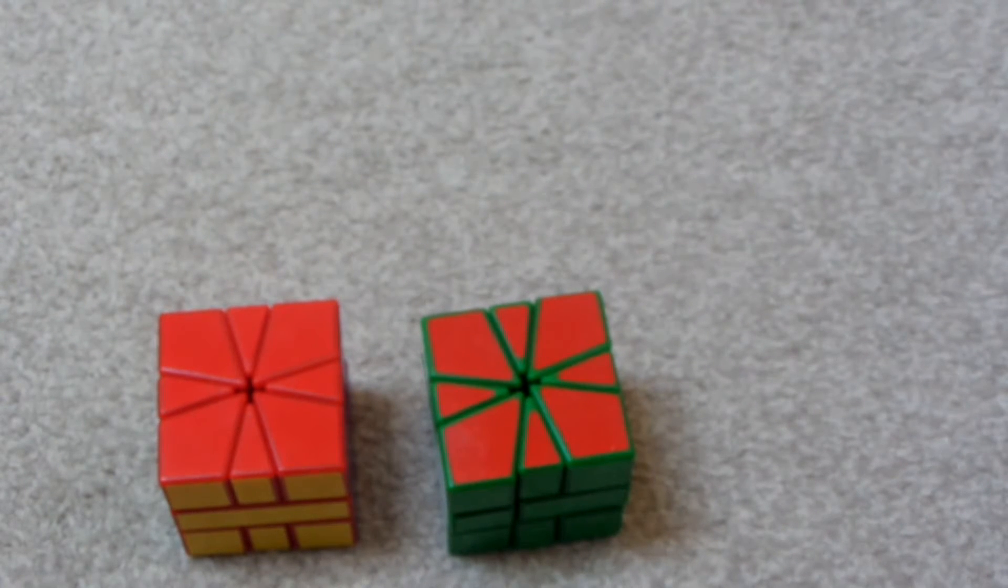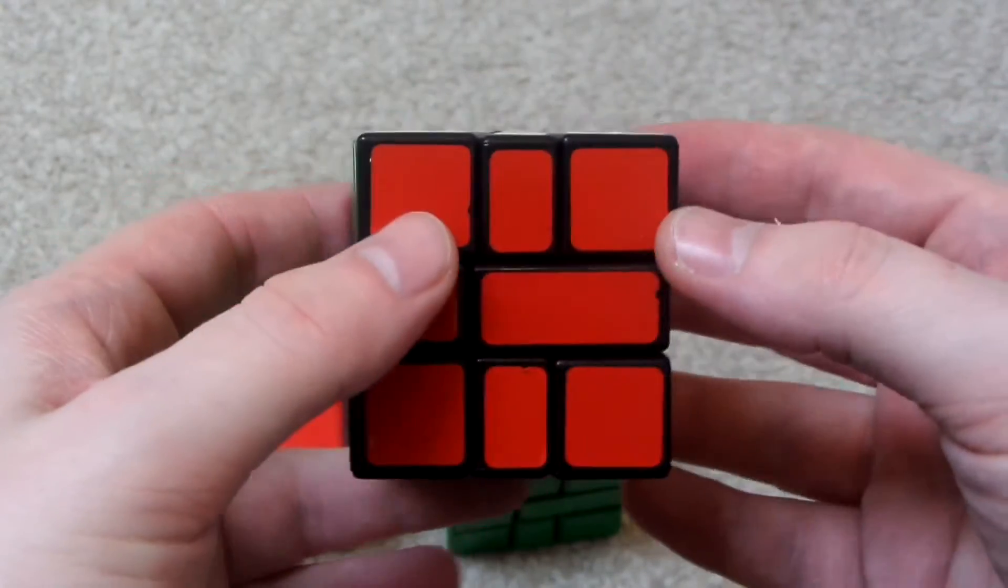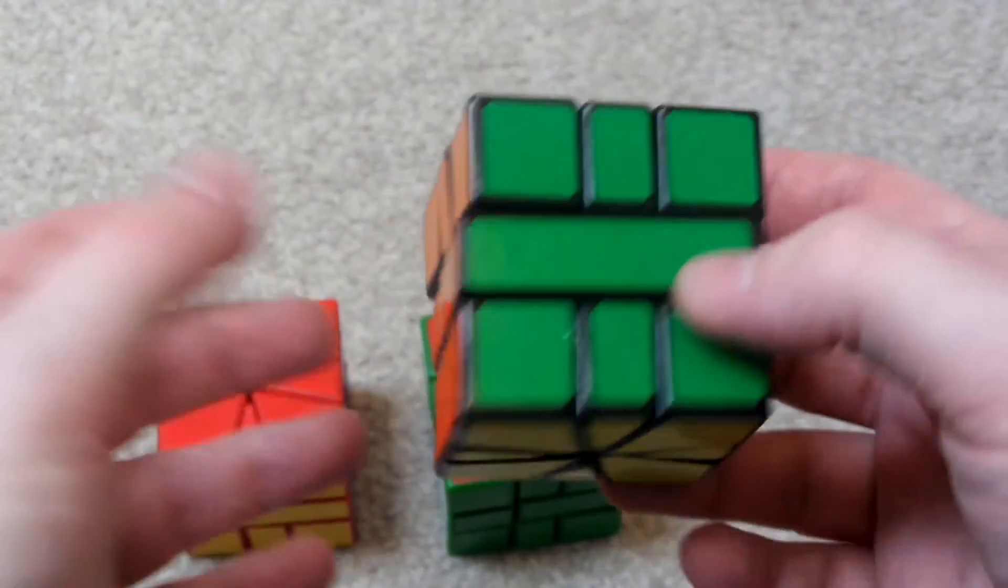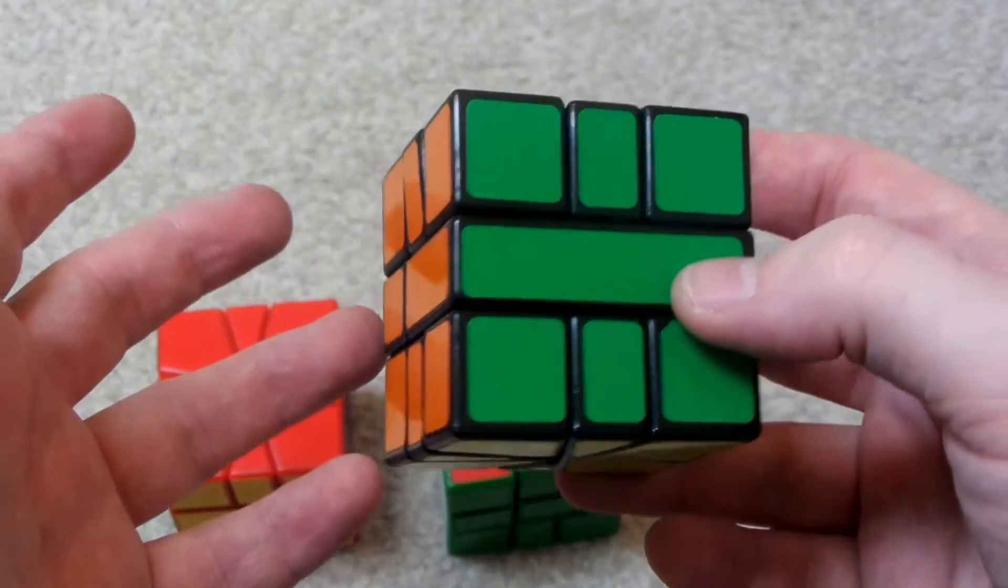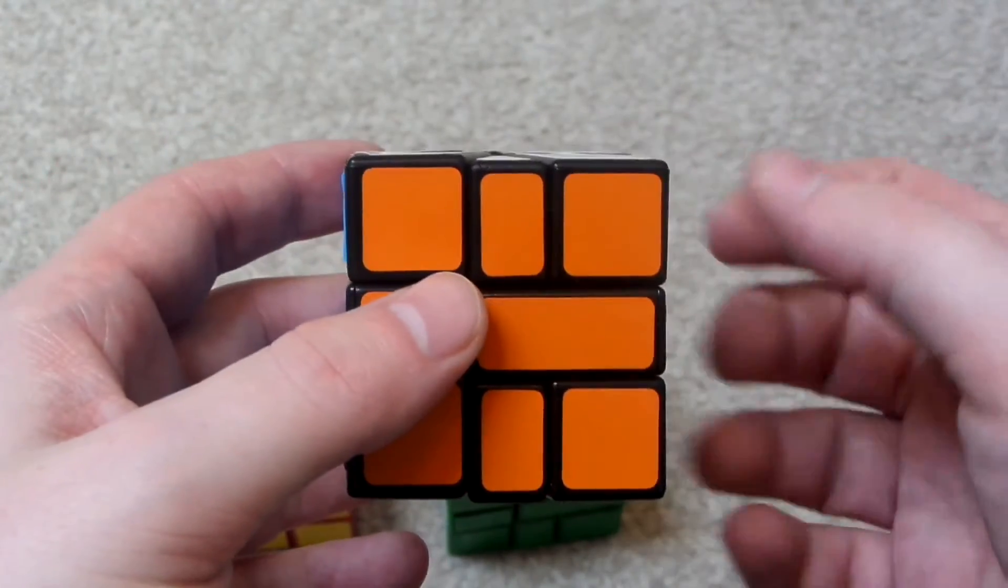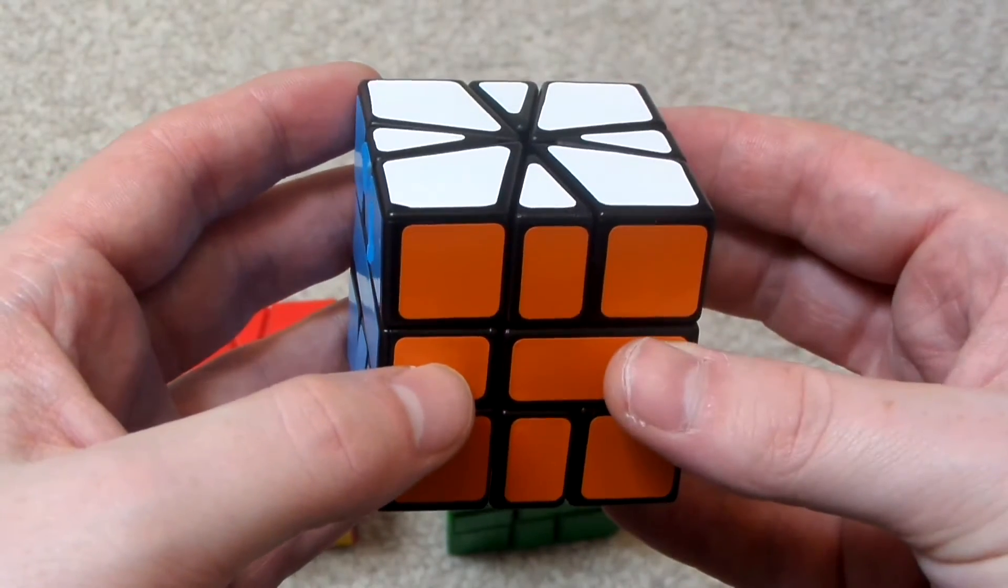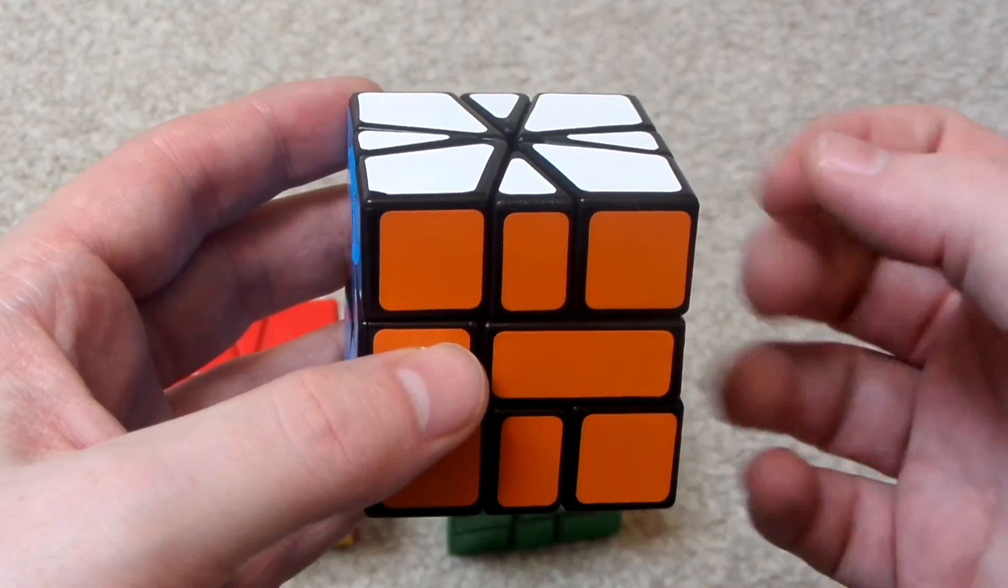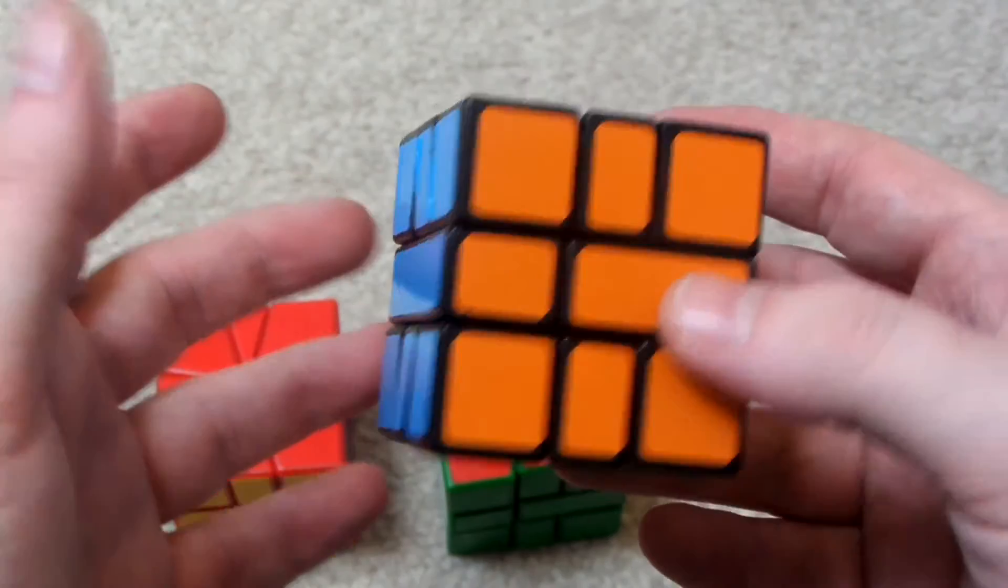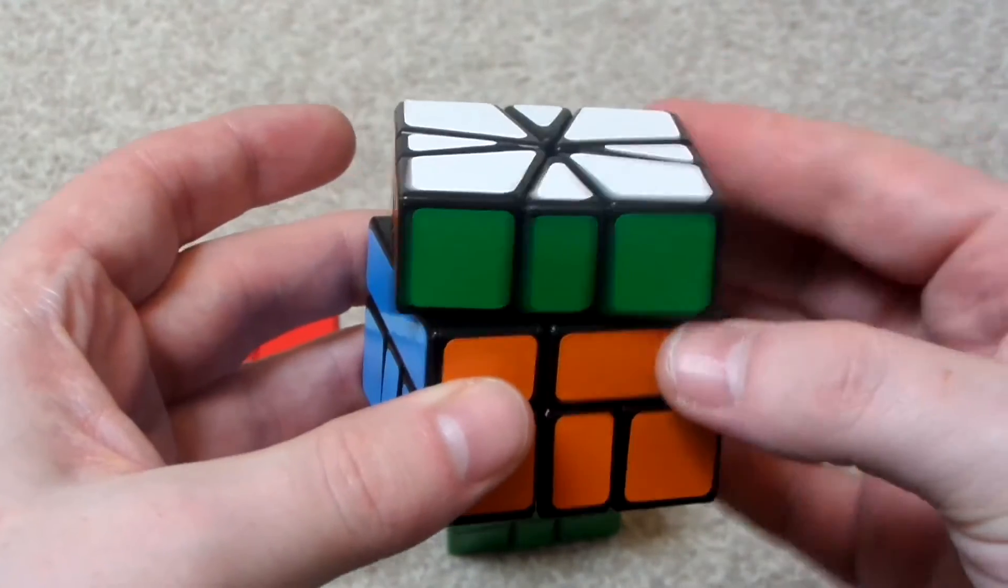I do have a Calvin Square-1 which is supposedly made from the same mold as the MF8 version one Square-1s. At first this was really bad, it was too stiff. I ended up cleaning it out and then it just ended up being way too loose and I tightened the tension on it. It didn't really improve it that much but then I ended up putting on a fairly viscous lube and I put on quite a lot of it. It was Calvin's lube to just gum the cube up to slow it down.